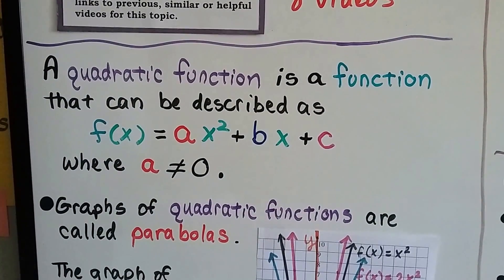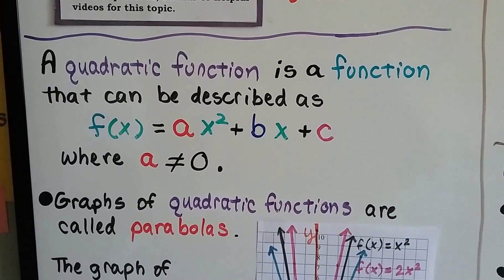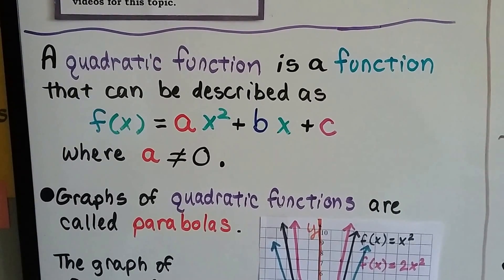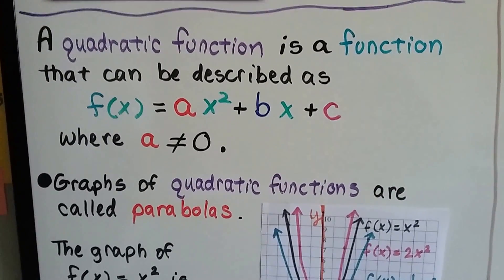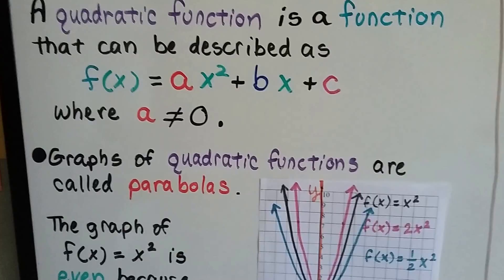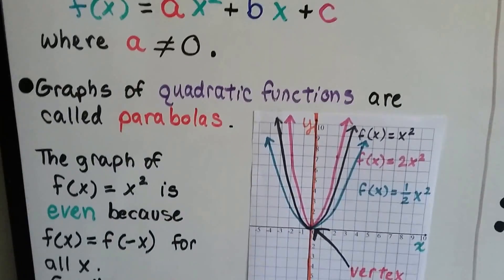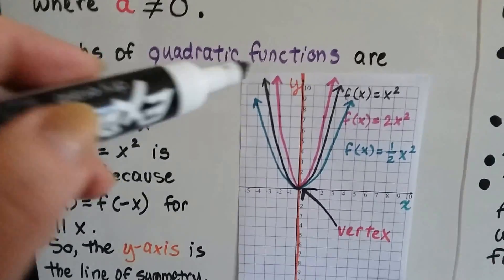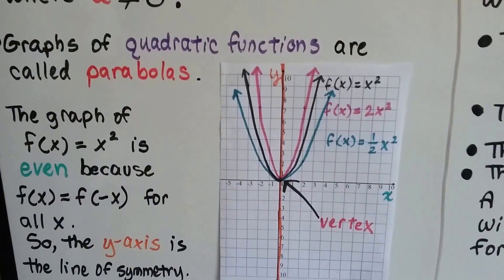A quadratic function is a function described as f(x) equals ax squared plus bx plus c, as long as a is not zero. Graphs of quadratic functions are called parabolas. This u-shaped curve is a parabola.